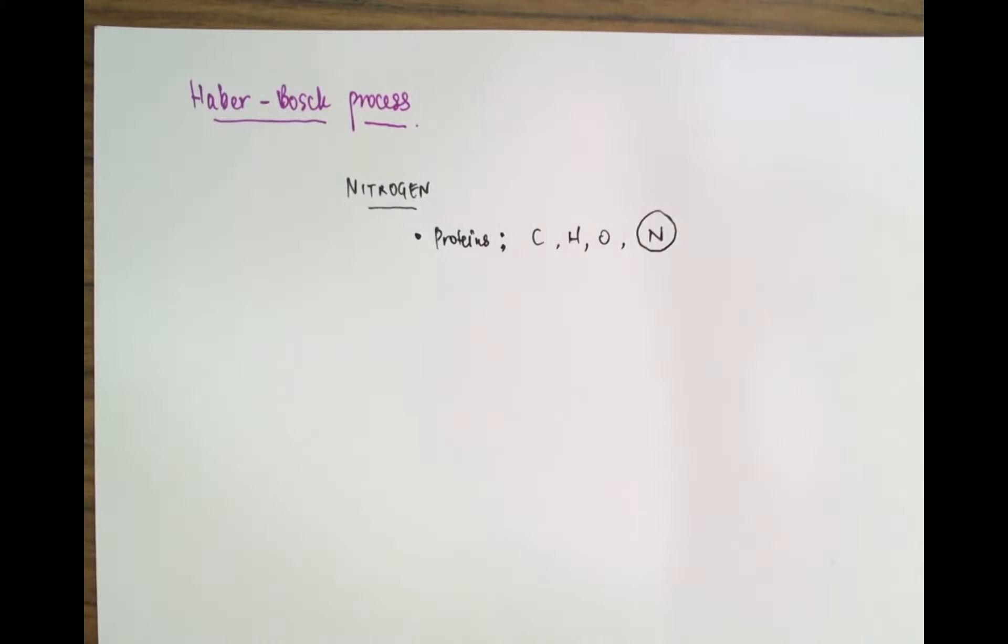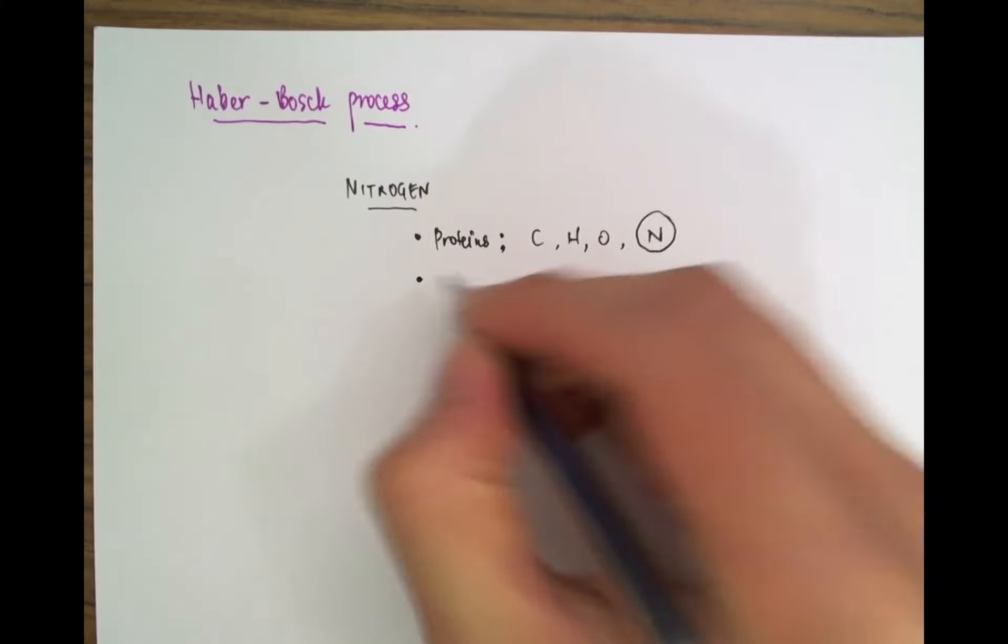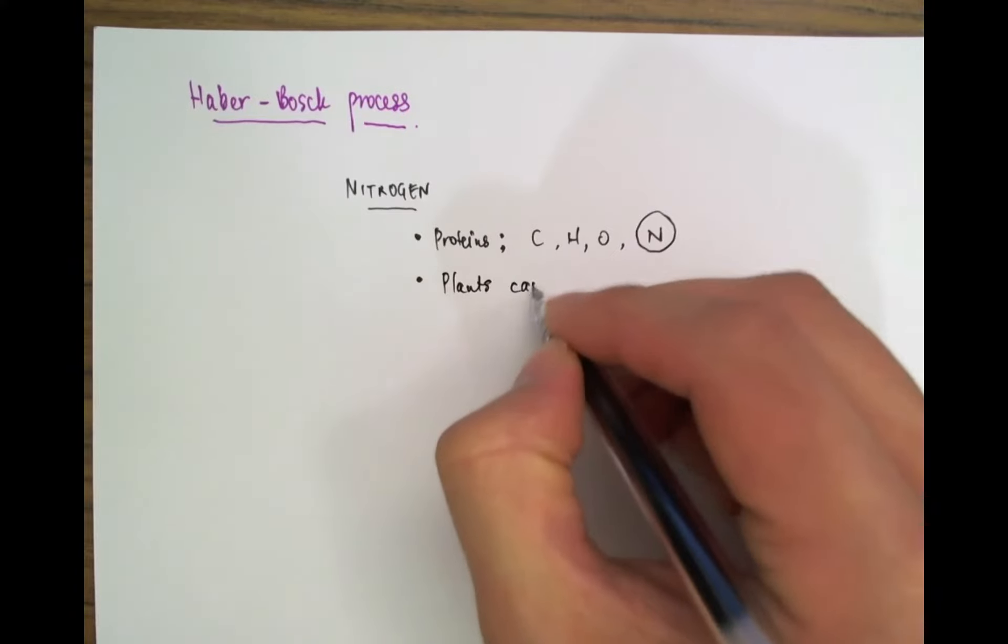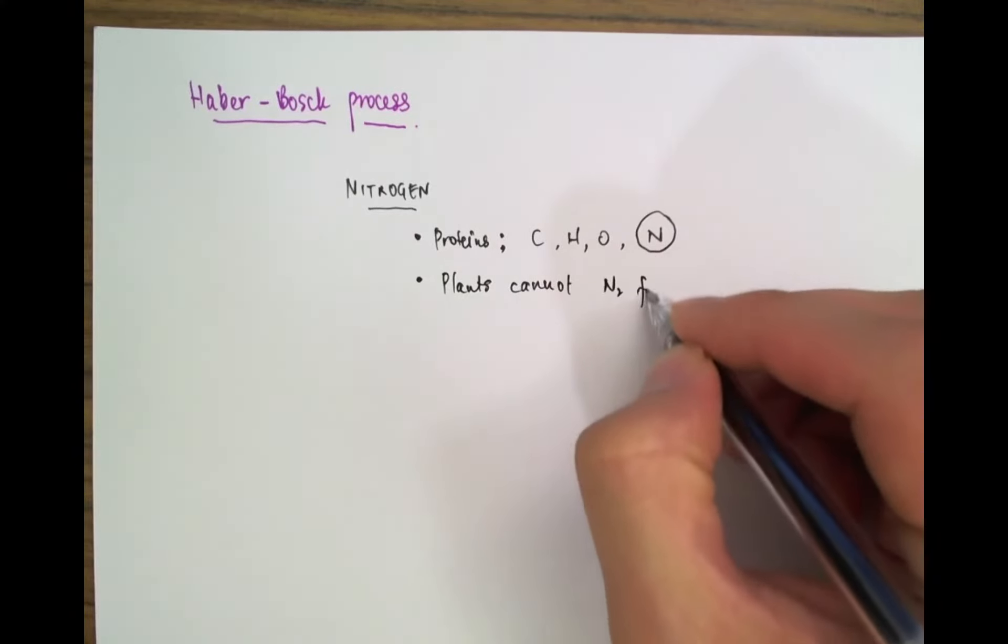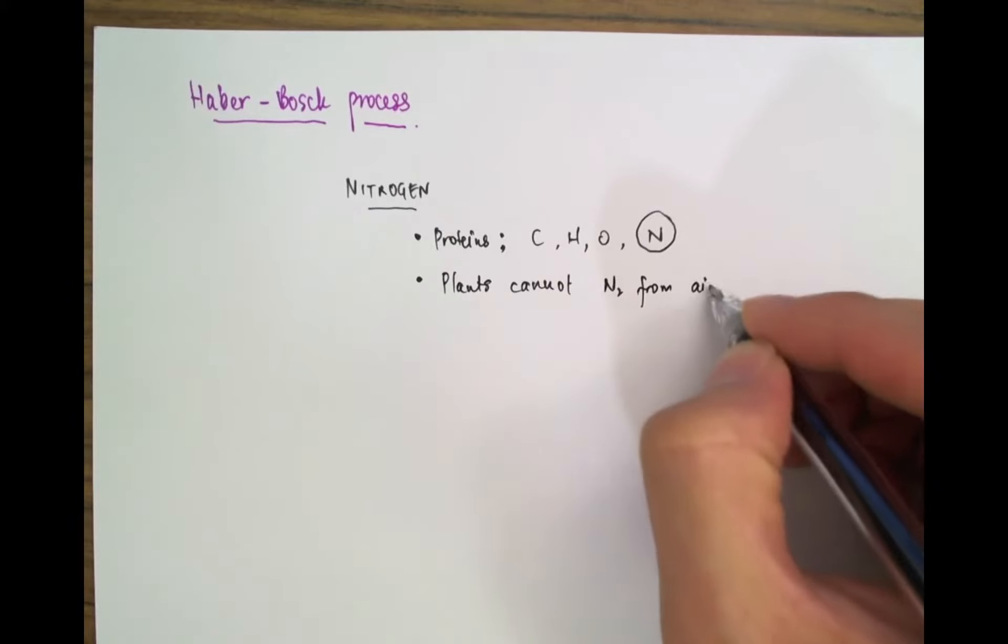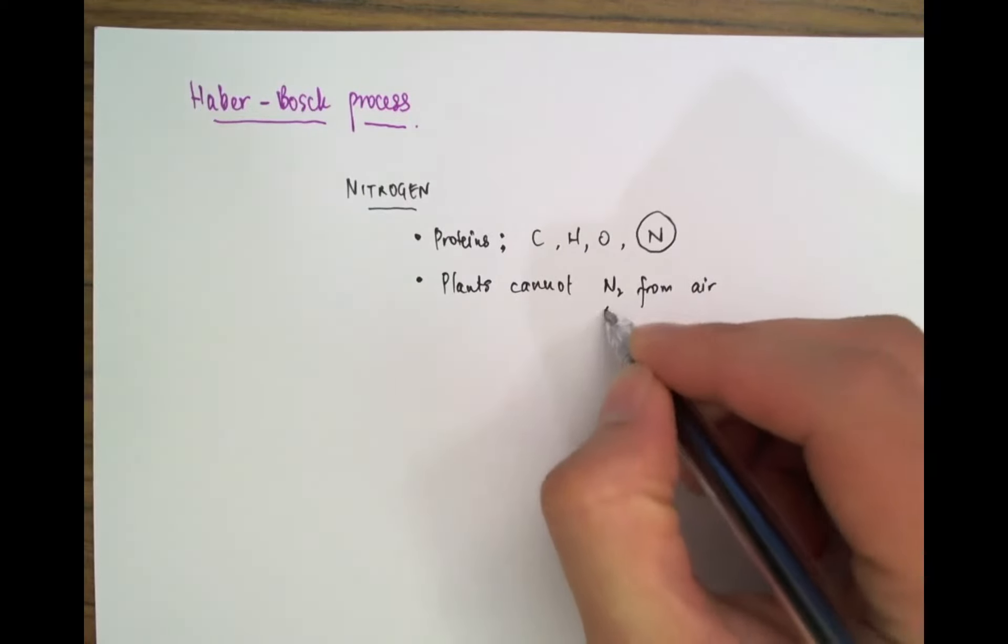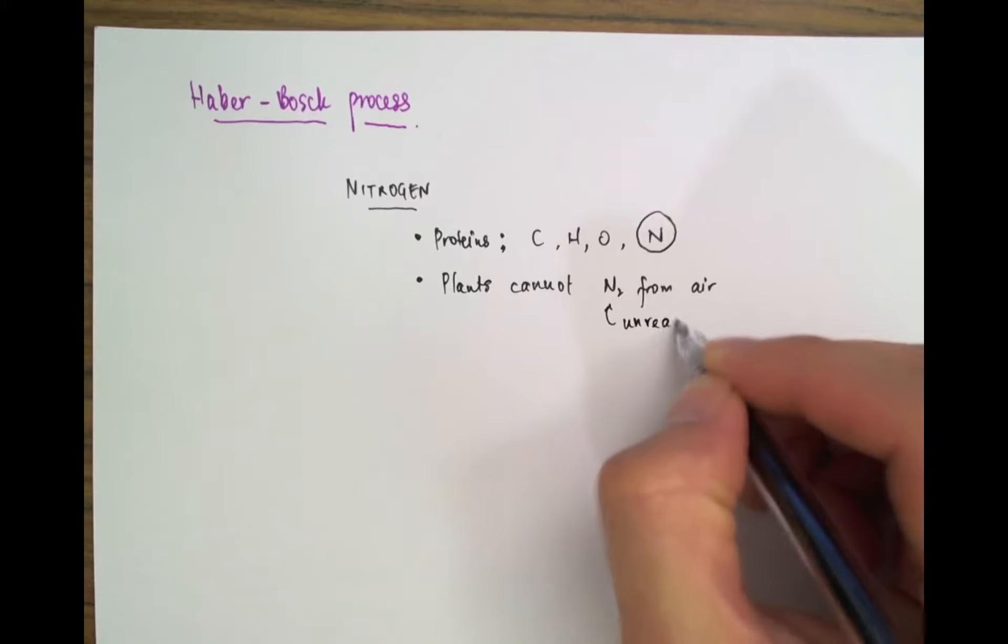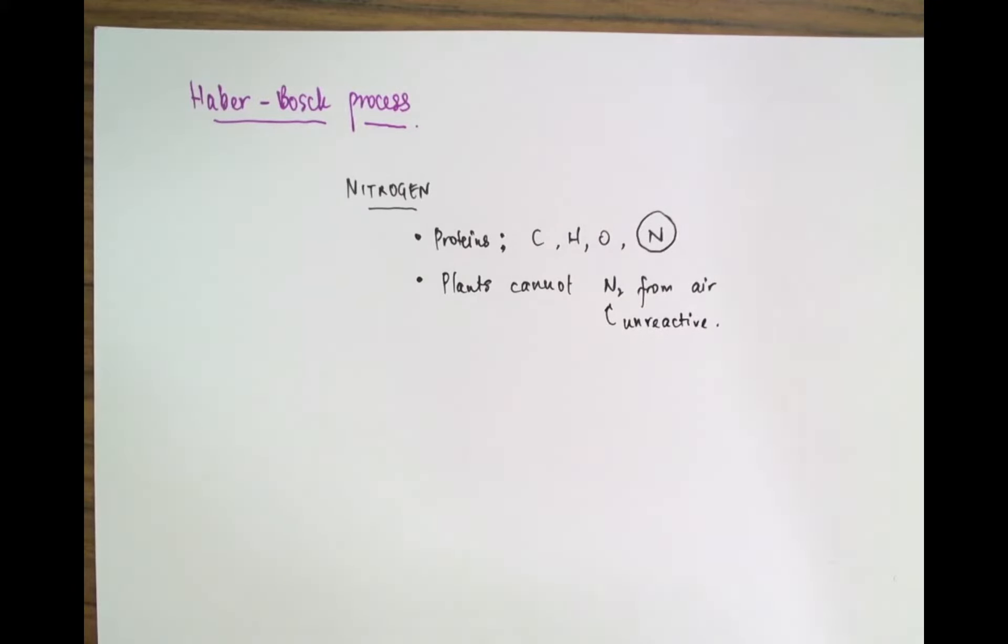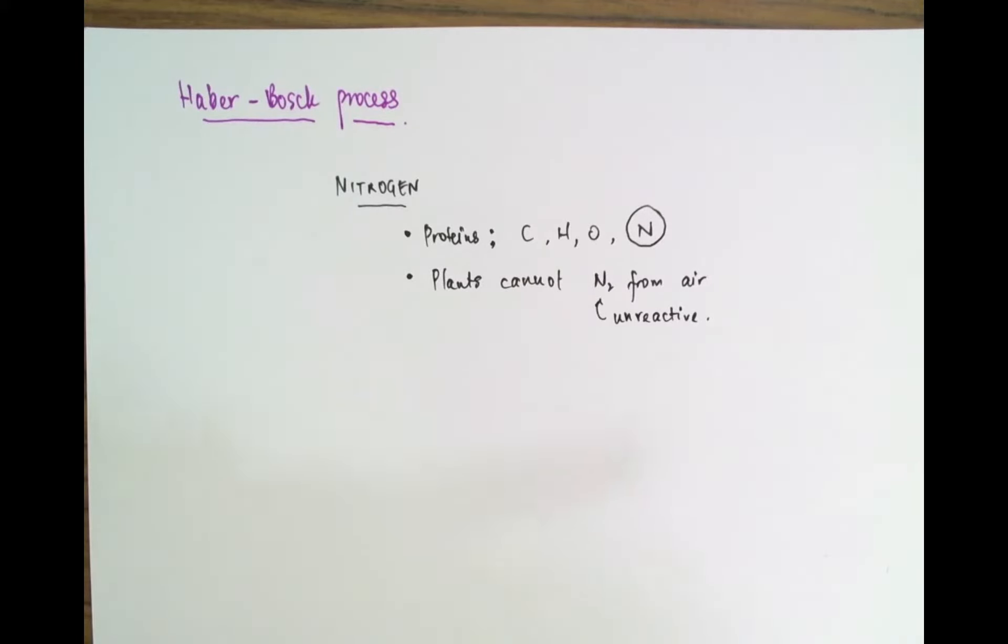Now in order to acquire this nitrogen in the food chain, plants are our most important link. But plants can't take in the nitrogen from air even though 78% of air is nitrogen. This is because of the extreme unreactivity of nitrogen.